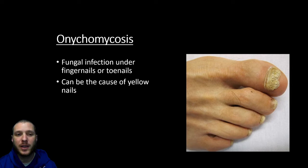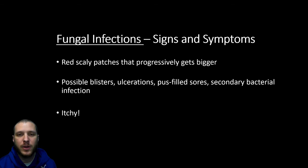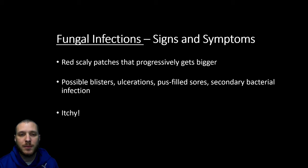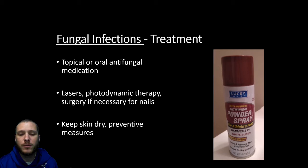You can also have a fungal infection of your fingernails or toenails called onychomycosis. Typically the toenail or fingernail will have a very brittle, yellow look to it. If that were to happen, you would just avoid touching the toes of that person. Overall, signs and symptoms of all these fungal infections include a red, scaly patch that progressively gets bigger, possible blisters or pus-filled sores which can lead to secondary bacterial infections — and all are very itchy.